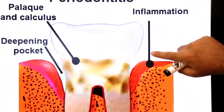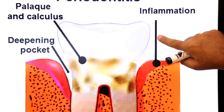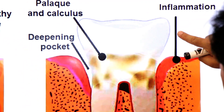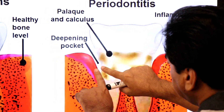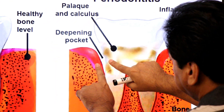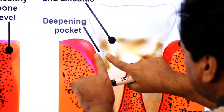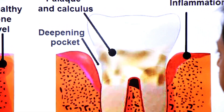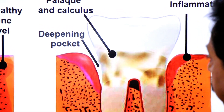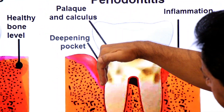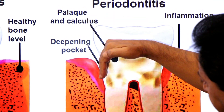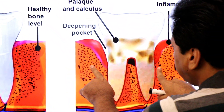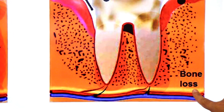Inflammation of the gums is called gingivitis. When gingivitis progresses, the gums are pulled away from the teeth, and bone loss begins to occur.